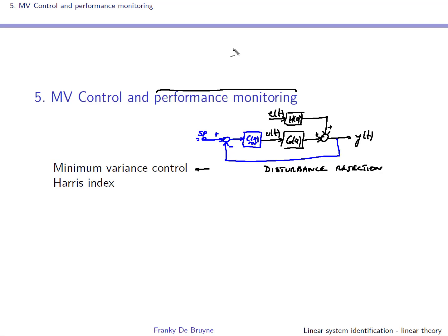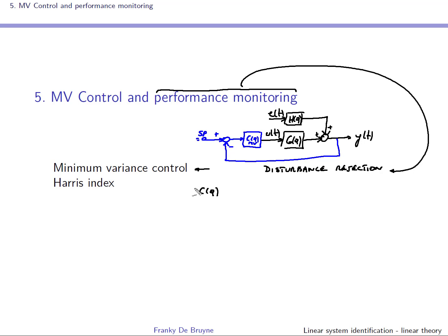Questions like: what is the rise time, what is the settling time? But you can also do performance monitoring and look at the disturbance rejection capability of your controller. If you have a particular controller CQ acting on your control loop, it would be interesting to know how this controller compares with the kind of optimal — and this will be given by the ARIS index.